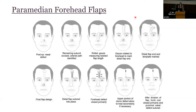Now for a brief overview of paramedian forehead flaps. Paramedian forehead flaps are usually used for facial defect reconstruction. Typically, this is done when a skin cancer on the nose is removed, creating a defect. Here in this image, you can see a defect from possibly skin cancer, and then the surgeon creates clear margins around the skin cancer.